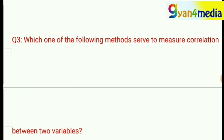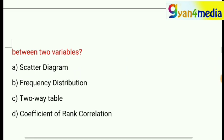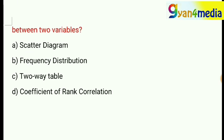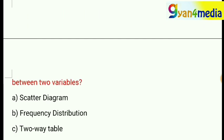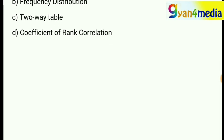Which one of the following methods serves to measure correlation between two variables? Options given are: A, scatter diagram; option B, frequency distribution; option C, two-way table; or option D, coefficient of rank correlation. This is a stats-based question, and the correct answer is option D — coefficient of rank correlation.